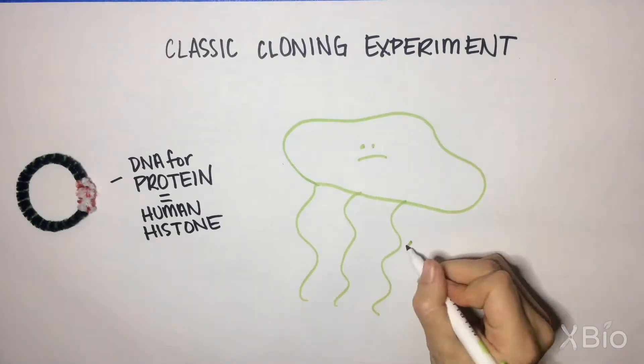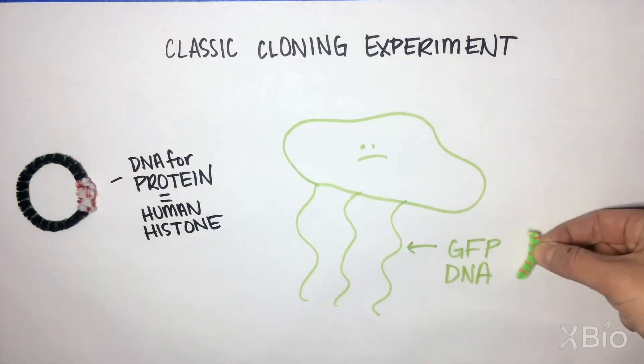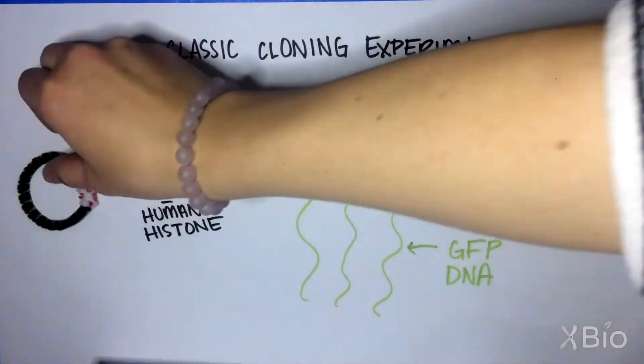We want the histone to fluoresce for our experiments. They usually don't, so we will add the DNA encoding GFP, which stands for green fluorescent protein. We borrowed this DNA sequence from the jellyfish.